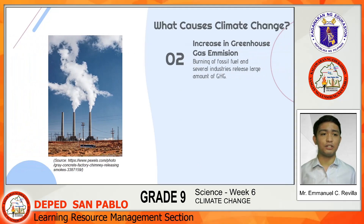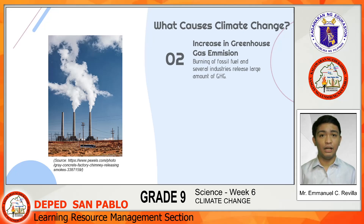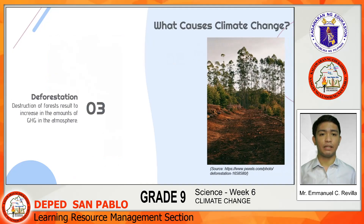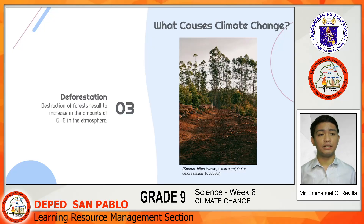Increase in greenhouse gas emission. We know that greenhouse gases occur naturally and are in fact important in making the planet livable. However, too much of this emission affects the climate. Burning of fossil fuel like coal and petroleum releases large amounts of carbon dioxide into the atmosphere, not to mention other greenhouse gases emitted by several industries. Deforestation — destruction of forests to meet the demands of a growing population adversely affects carbon dioxide absorption, resulting in more greenhouse gases in the atmosphere.